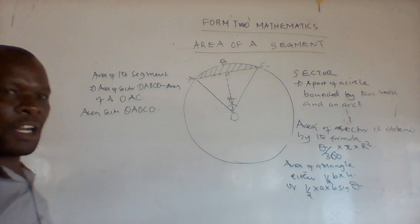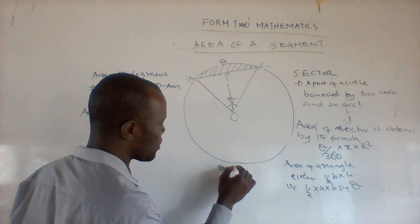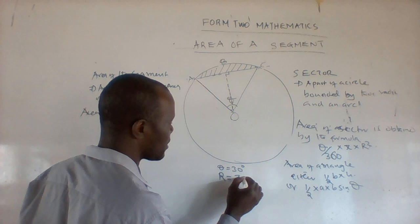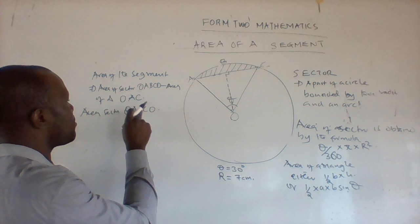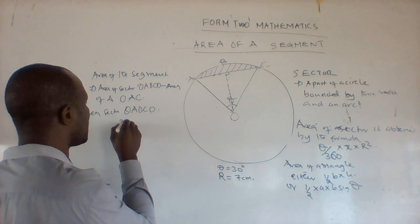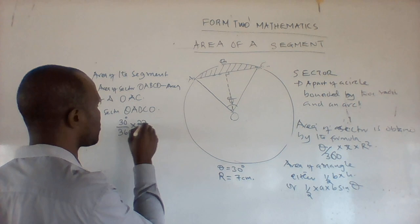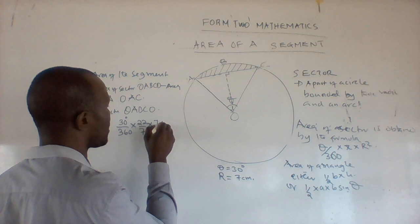Now let's consider the following dimensions: theta is equal to 330 degrees and radius r is equal to 7 centimeters. The area of sector OABCO will therefore be equivalent to 330 divided by 360, times pi (taking pi as 22/7), times 7 times 7.